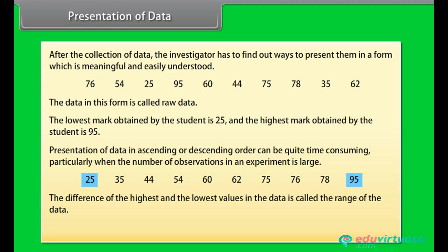The difference of the highest and the lowest values in the data is called the range of the data. So the range in this case is 95 minus 25, which is equal to 70.